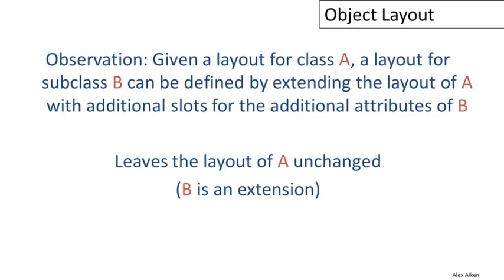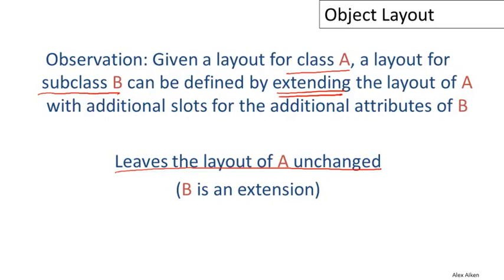Now we're ready to talk about how inheritance works. The basic idea is that given a layout for class A, a layout for a subclass B can be defined by extending the layout of A. We don't need to move any of A's attributes — we can just add more fields onto the end of A's layout. This leaves A's layout unchanged, which means the position of an attribute in the A object will always be the same for all subclasses. B is just an extension of the layout of A.